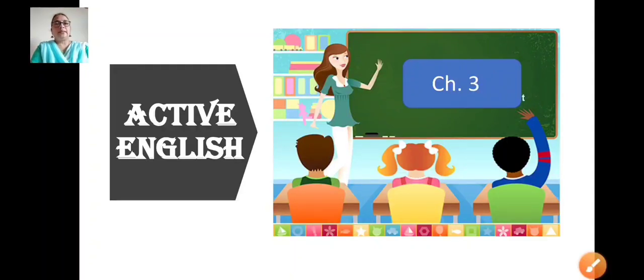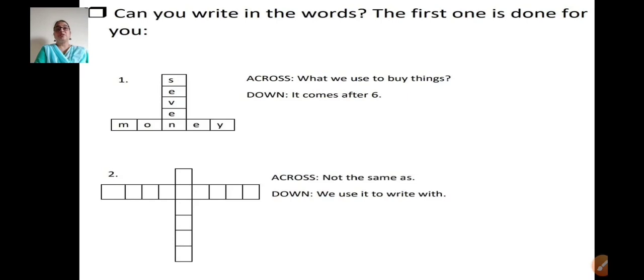Sairam children, so today in English class we are studying Active English. Chapter 3 we will cover today. So if you have books, you can keep it with you right now children along with your pencils and erasers. If you don't have your workbooks of Active English, you can note it down on paper. Otherwise I will be sharing the notes. But if you have the books, please keep it with you.